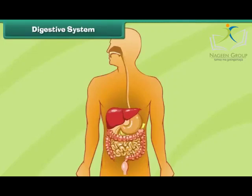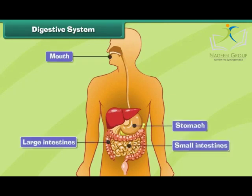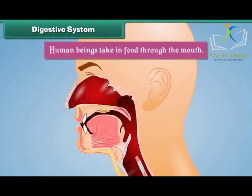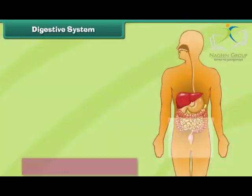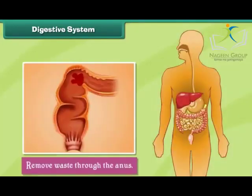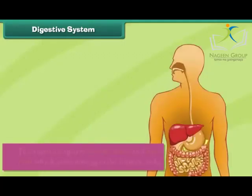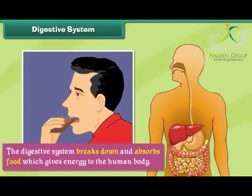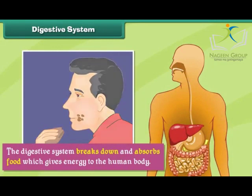The human digestive system consists of the mouth, stomach, intestines, and anus. Human beings take in food through the mouth and remove waste through the anus. The digestive system breaks down and absorbs food, which gives energy to the human body.